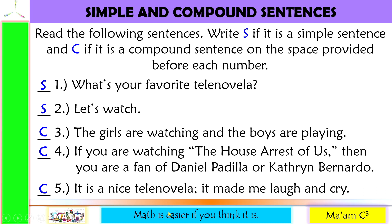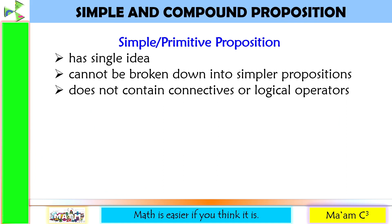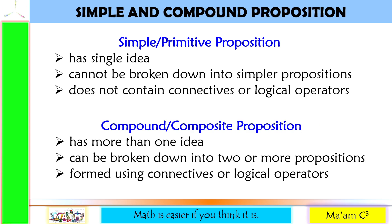There is also simple and compound proposition. When we say simple or primitive proposition, it has a single idea. It cannot be broken down into simpler propositions, and it does not contain connectives or logical operators. When we say compound or composite proposition, it has more than one idea. It can be broken down into two or more propositions, and it is formed using connectives or logical operators.